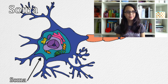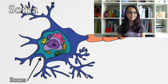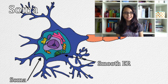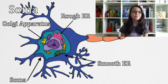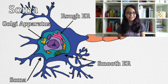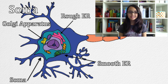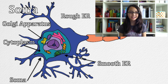The soma is the main body of the neuron. It stores many of the organelles typical to an animal cell, such as the smooth endoplasmic reticulum, the rough endoplasmic reticulum, the Golgi apparatus, and many others. The soma's size ranges from 0.005 millimeters to 1 millimeter in mammals. The soma is filled with jelly-like cytoplasm found in all animal cells, and like in the basic animal cell, it holds all the organelles.